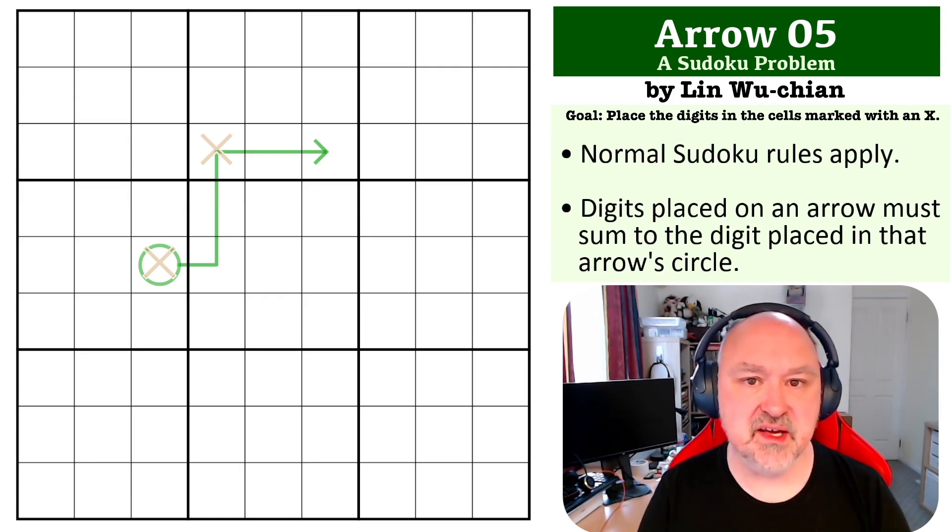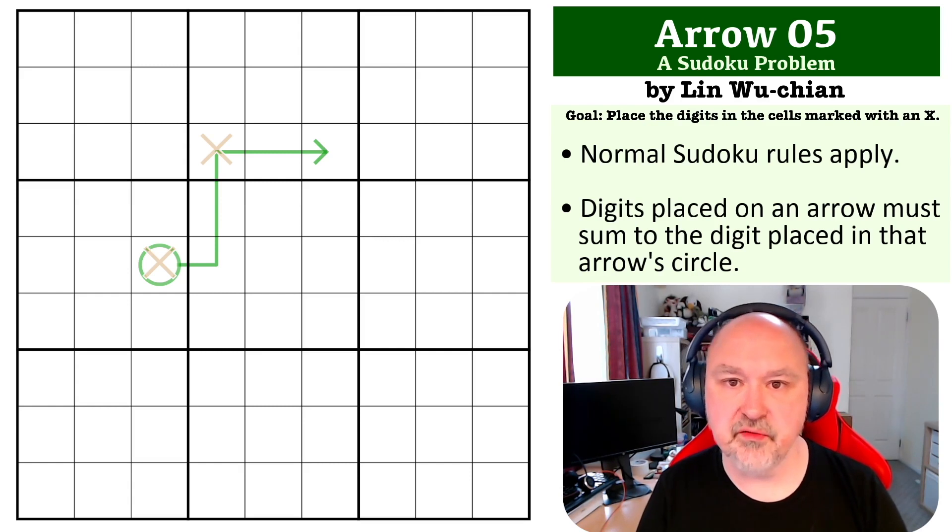The way arrows work is the digits placed in the arrow's circle is the sum of all the digits placed along the length of the arrow. The goal on this one is to place the digits in the cells marked with X's. There's a link to this below if you need a grid to solve it. Otherwise, I'm going to give you a few seconds where you can pause the video, and then I'll be back to explain how this one works.